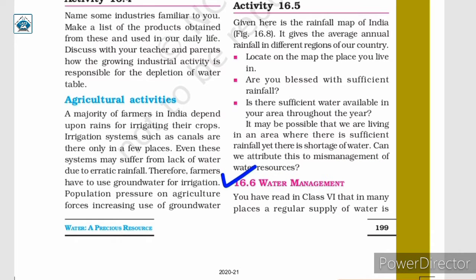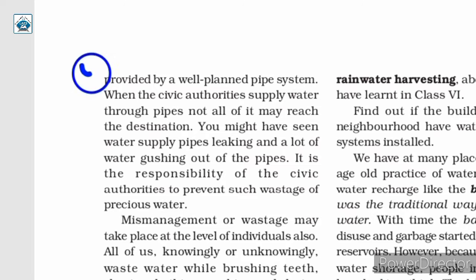With this, let us discuss the next topic: water management. In many places, a regular supply of water is provided by a well-planned pipe system. When the civic authorities supply water through pipes, not all of it may reach the destination. You might have seen water supply pipes leaking and a lot of water gushing out. It is the responsibility of the civic authorities to prevent such wastage of precious water. Water management is necessary to ensure that everyone gets access to an adequate amount of water.